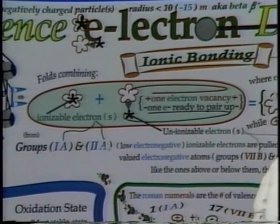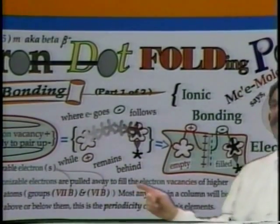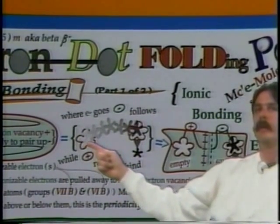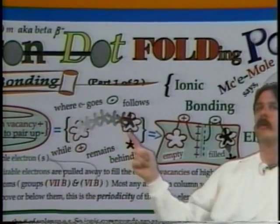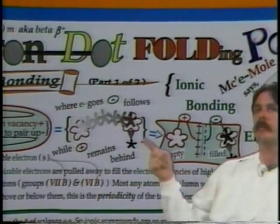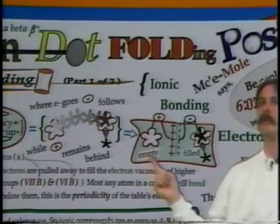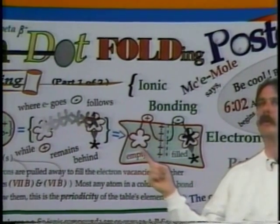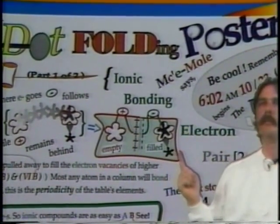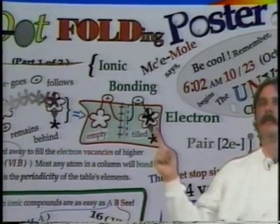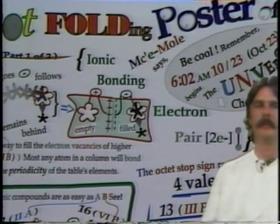Ionizable electrons are transferable. This is how we picture ionic bonding occurring — the element on the left-hand side of the table that has an electron available to donate will actually come over and fill the space, forming an electron pair of the more electronegative atom on the right-hand side of the table. What results is an empty electron space leaving a positive charge, because a negative charge left. On the more electronegative atom, the electron fills that space, completing an electron pair to complete the octet. That's ionic bonding.